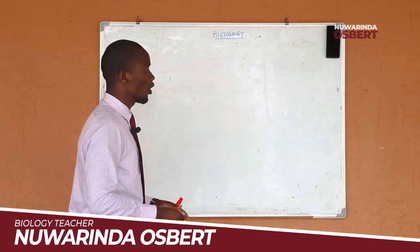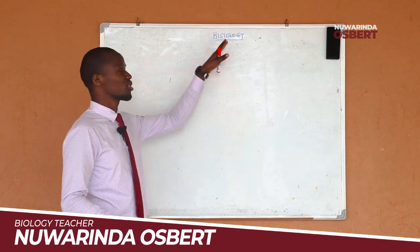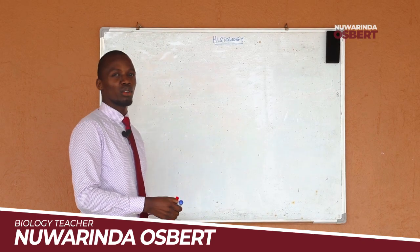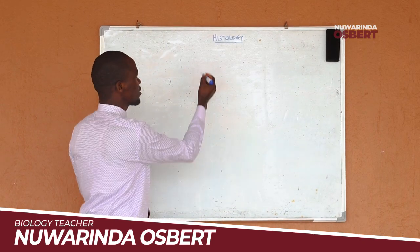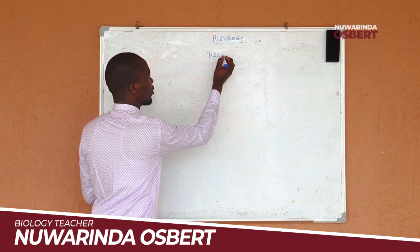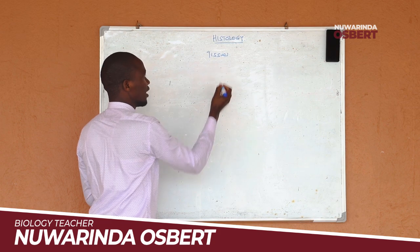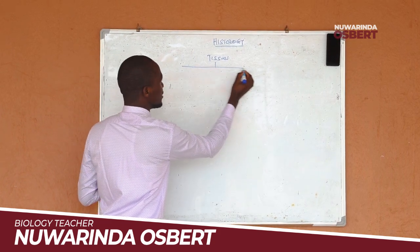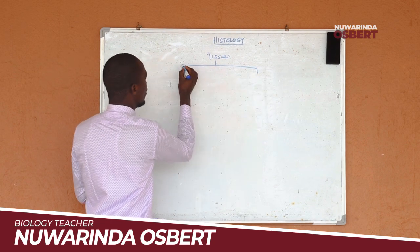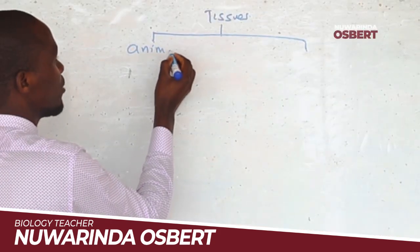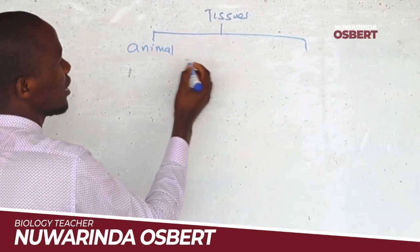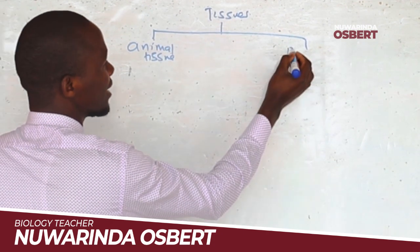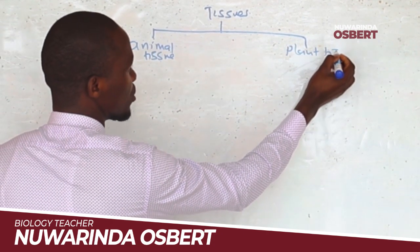In the previous episode, we were able to see that histology is the study of tissues, and we saw that when we talk about tissues, they are categorized into two different types: animal tissues and plant tissues.